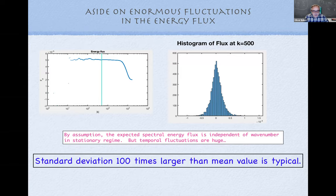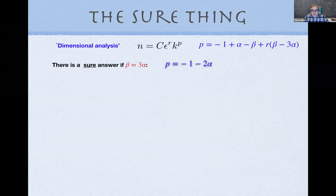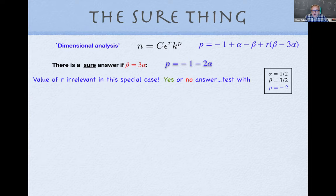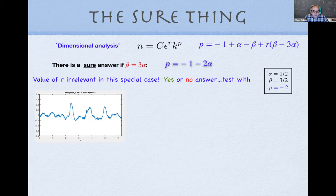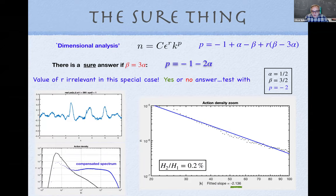When β = 3α, a special case, the value of r doesn't matter and you get a distinct prediction for the slope depending only on α — a yes-or-no test. Simulating this case, the compensated spectrum does seem consistent with a slope of about −2.1, compared to the predicted −2, so this dynamic similarity seems to have some validity.